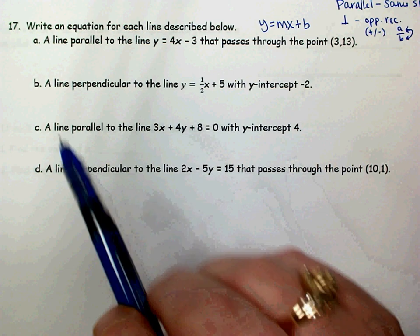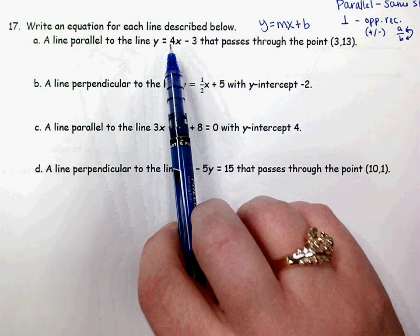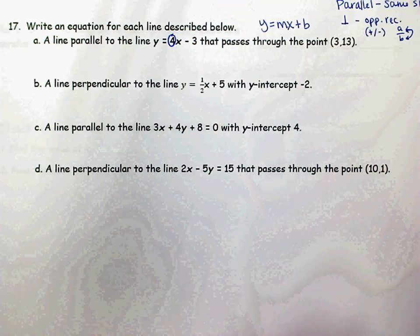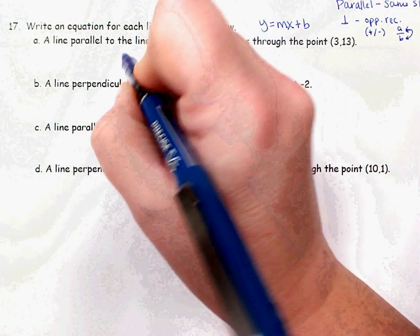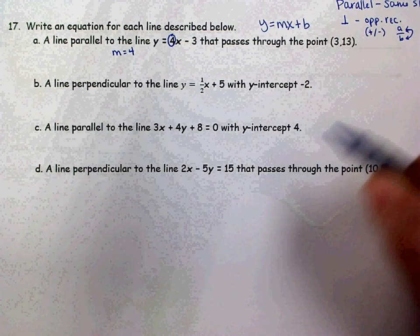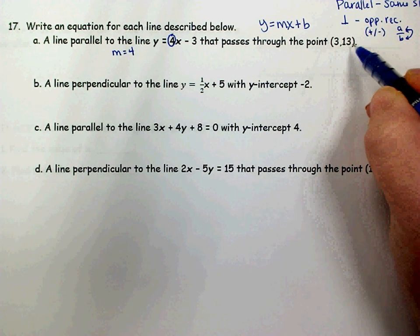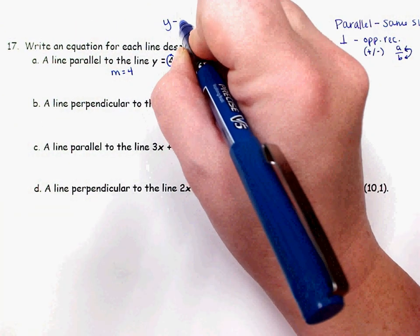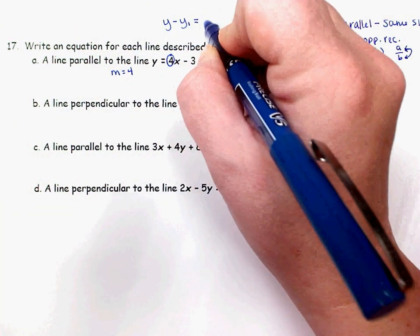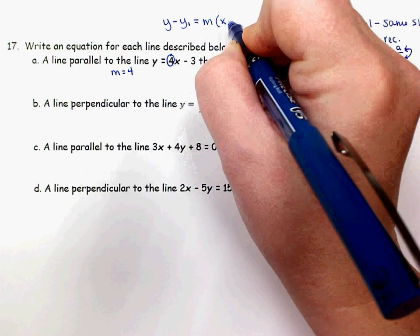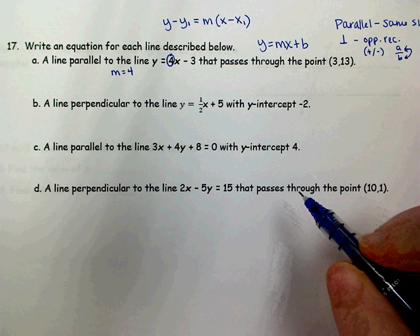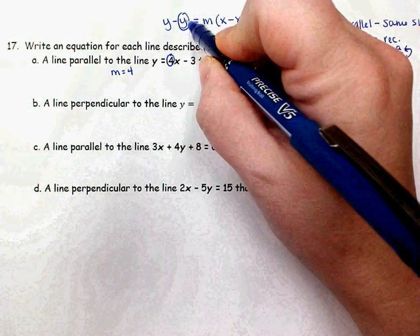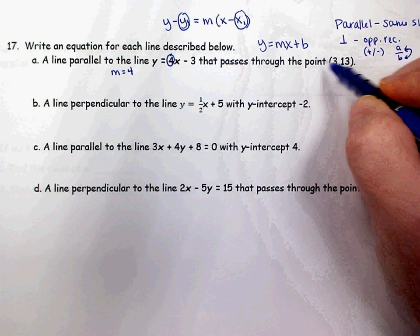On letter A, if we want to write a line that's parallel to this line, we want it to have the same slope. The number in front of x is my slope, so I want my slope to also be four. I'm given a point that it goes through, so we're going to use point-slope form — y minus y-sub-1 equals m times x minus x-sub-1 — to write the equation.